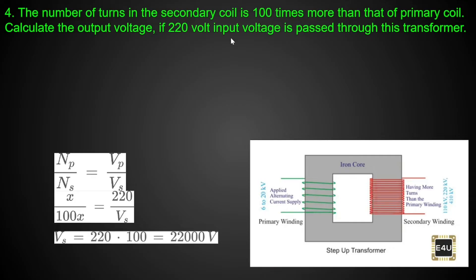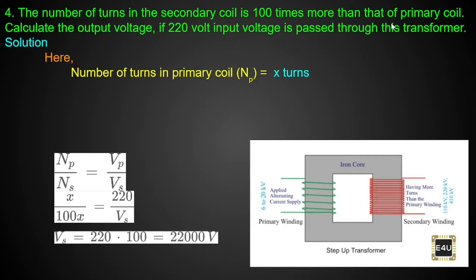The next question: the number of turns in the secondary coil is 100 times more than that of the primary coil. Calculate the output voltage if 220 volts input is passed. The primary turns are not given, so let Np equal x turns. Since secondary coil is 100 times the primary coil, Ns equals 100x.